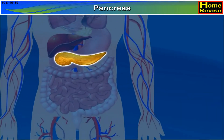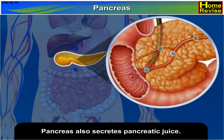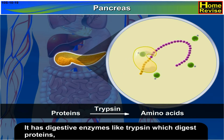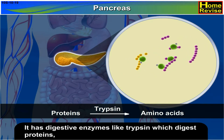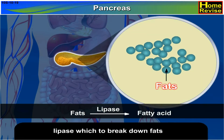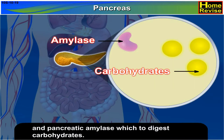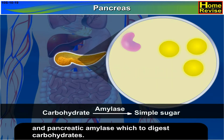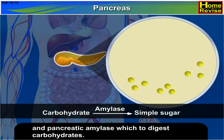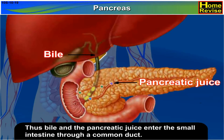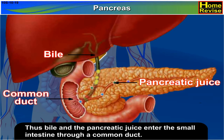The pancreas secretes pancreatic juice. It has digestive enzymes like trypsin, which digests proteins; lipase, which breaks down fats; and pancreatic amylase, which digests carbohydrates. Bile and pancreatic juice enter the small intestine through a common duct.